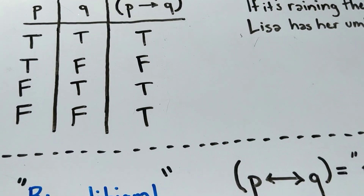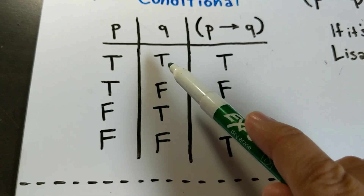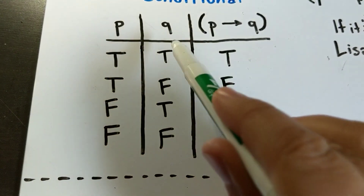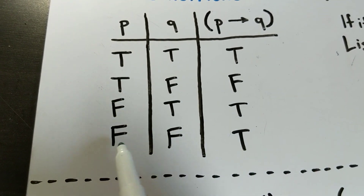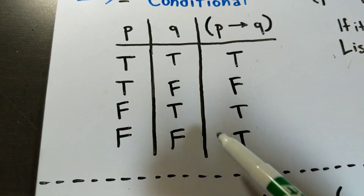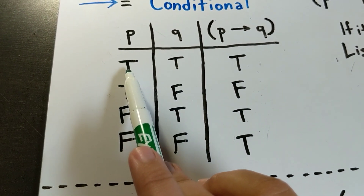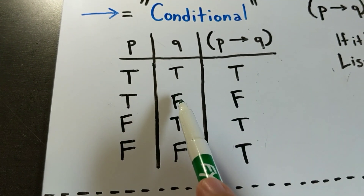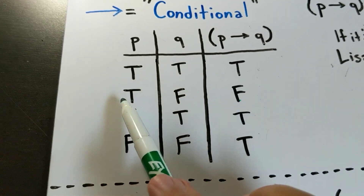Here's the truth table. What this requires is that any time P is true, then Q has to be true. That's the only requirement the conditional makes — if P is true, Q has to be true. It doesn't make any requirements about what happens when the first one is false. So if P is true and Q is true, then 'if P then Q' is true. If P is true and Q is false, that's the only case where the conditional can be false.